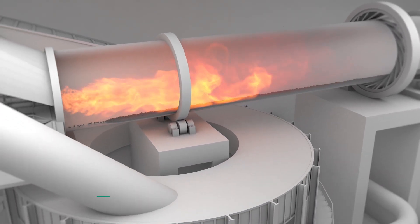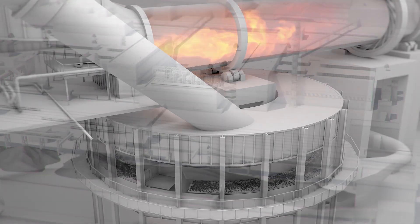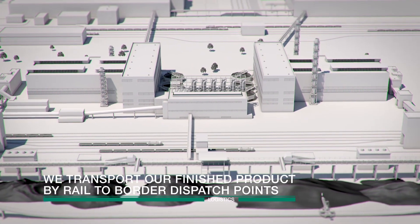The hot pellets are then discharged from the kiln into the ring cooler for cooling, following which they are transported to the stockyard for shipment.